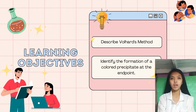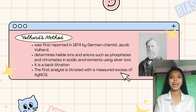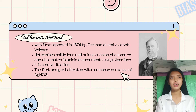Volhard's Method was first reported in 1874 by German chemist Jacob Volhard. This technique determines halide ions such as fluorine, chlorine, bromine, and iodine, and anions such as phosphates and chromates in acidic environments using silver ions.